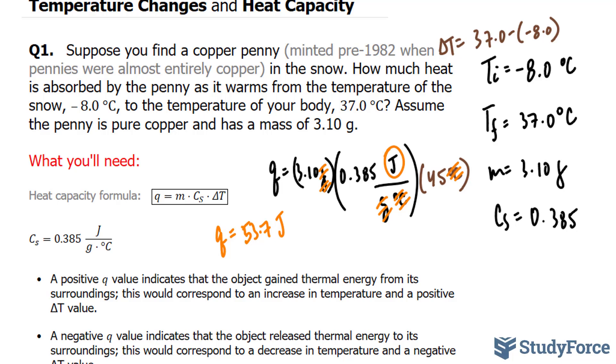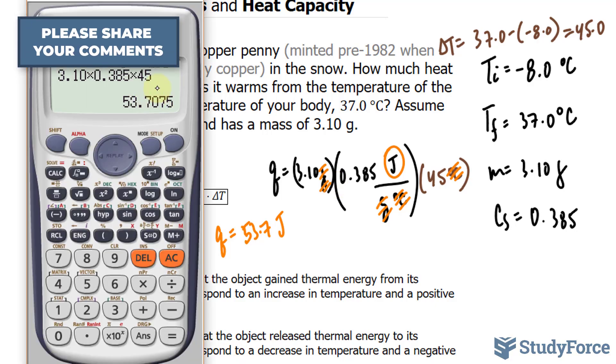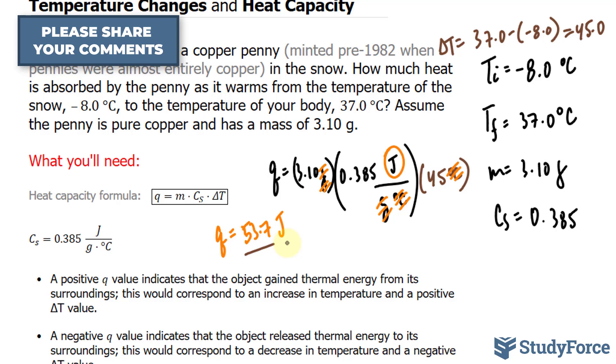We also want to take into account the number of significant figures. When we subtracted these two numbers, we got 45, so we have 45.0. That's 3 significant figures, so is this, and so is that. So our final answer should have 3 significant figures. The number following the 7 is a 0, so we stop at this number.